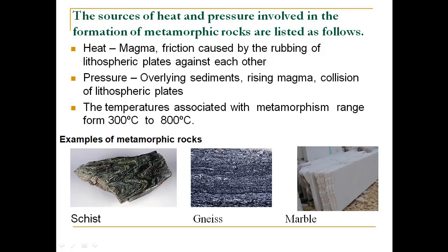The sources of heat and pressure involved in the formation of metamorphic rock are: primarily rising magma, which causes surrounding rocks to alter into new rock; friction between two lithospheric plates, also responsible for metamorphic rock formation; the weight of overlying sediments, which creates tremendous pressure and heat; and igneous intrusion from rising magma. At large-scale metamorphism, collision of two lithospheric plates at a convergent boundary causes tremendous pressure. The average temperature involved is around 300 to 800°C. Some examples of metamorphic rock are schist, gneiss, and marble.